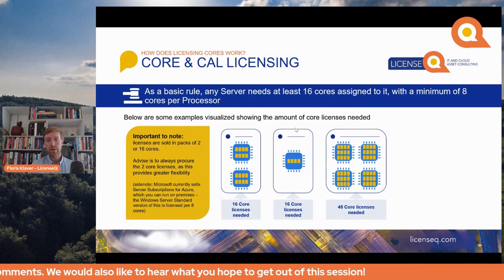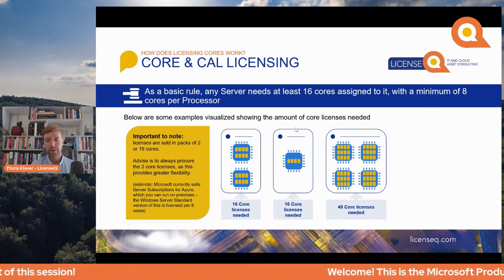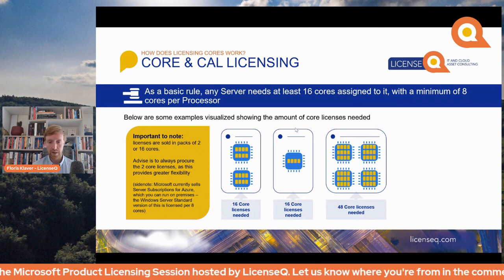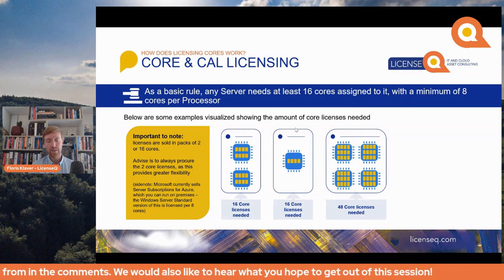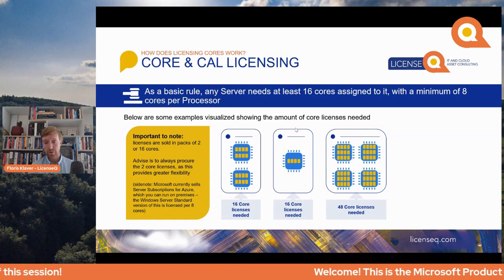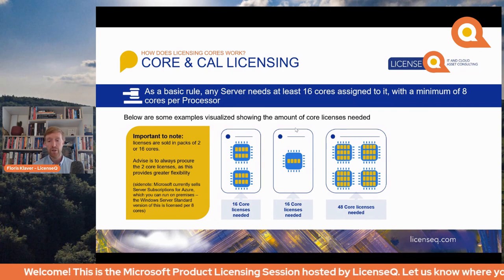Three examples illustrate the core licensing rules. First, a server with two processors each with eight cores requires 16 core licenses. Second, a server with one processor and four cores still requires the minimum of 16 core licenses — you cannot simply assign four. Third, a server with four processors and 12 cores per processor requires 48 core licenses to be correctly licensed.